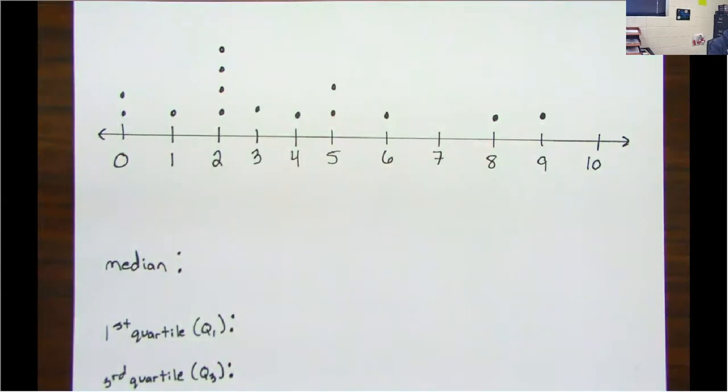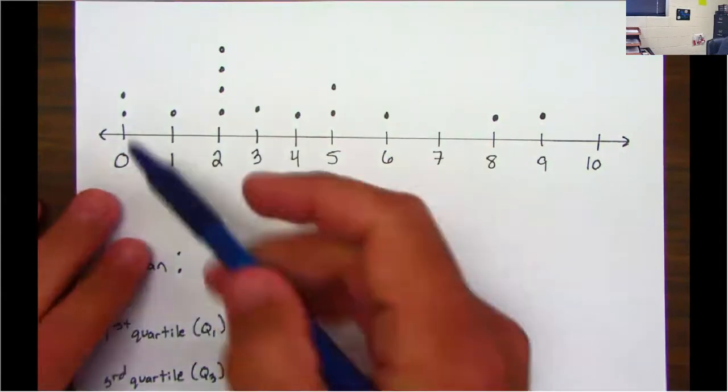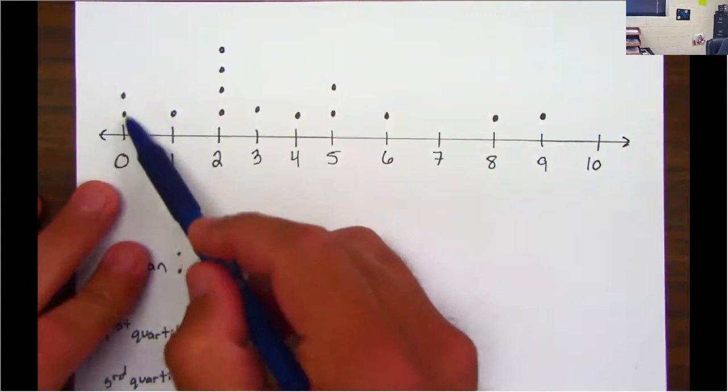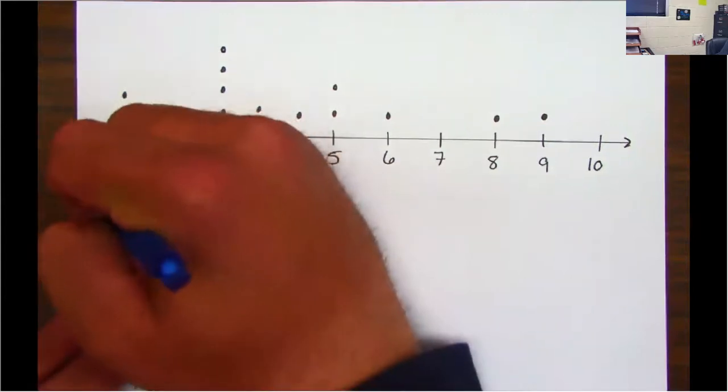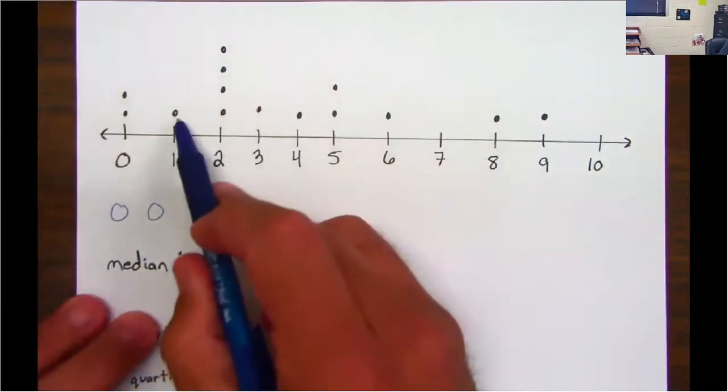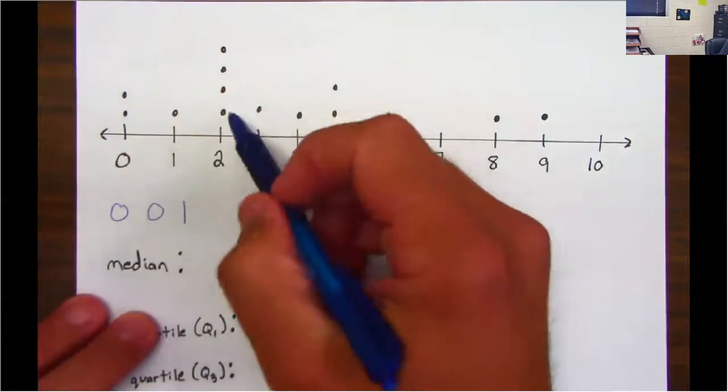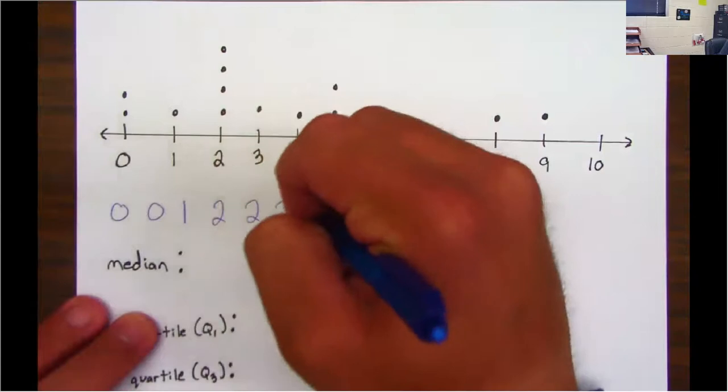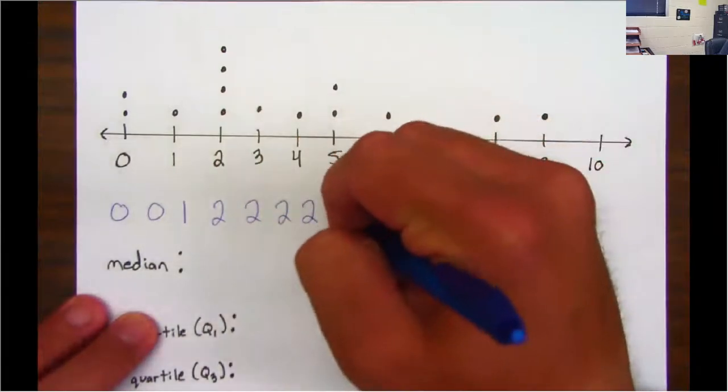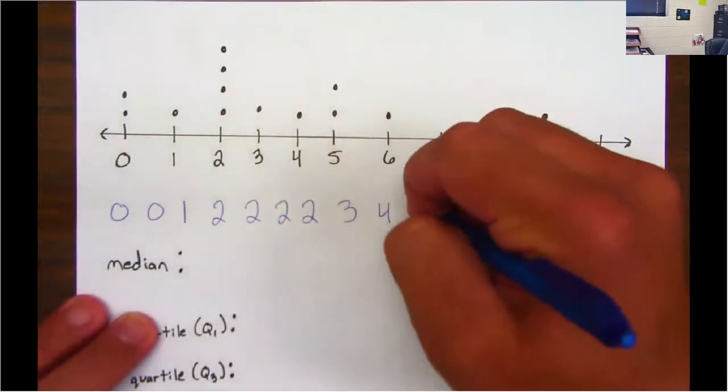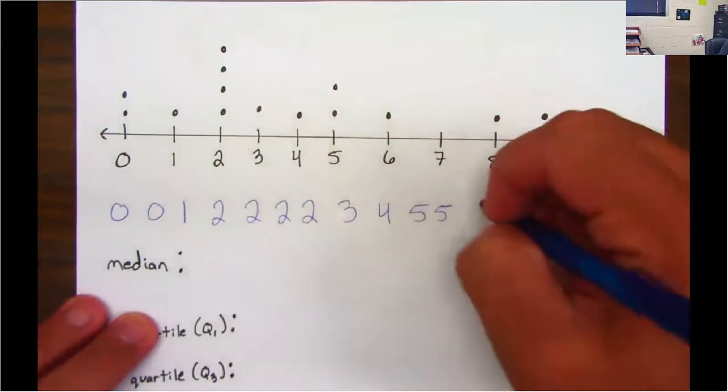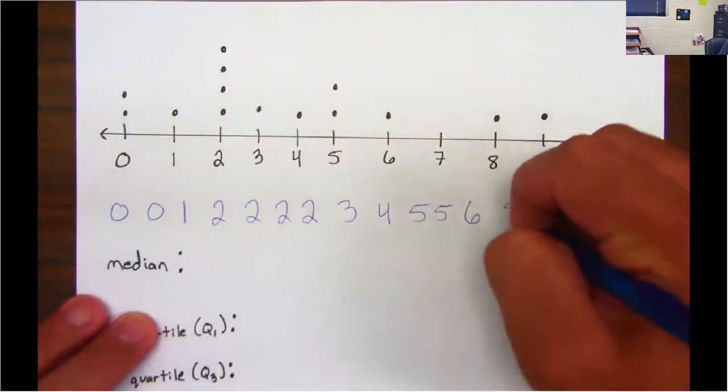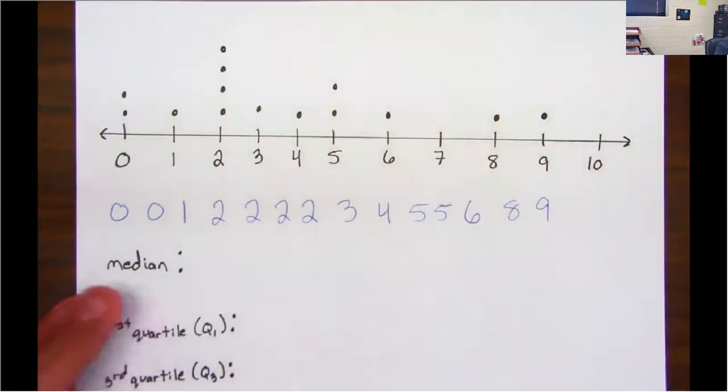What I recommend first is writing out each number in order from least to greatest. For example, on the number zero I have two dots, that means I have two zeros. I have a one, I have four twos, I have a three, I have a four, I have two fives, a six, an eight, and a nine.